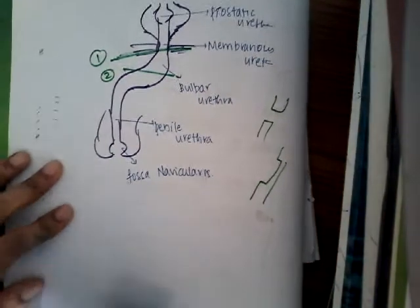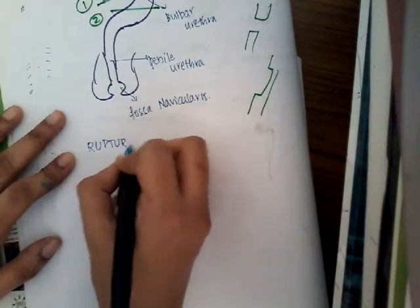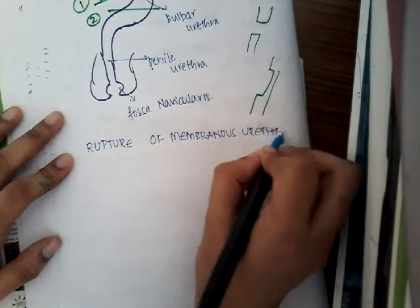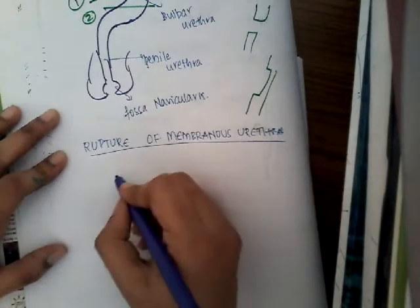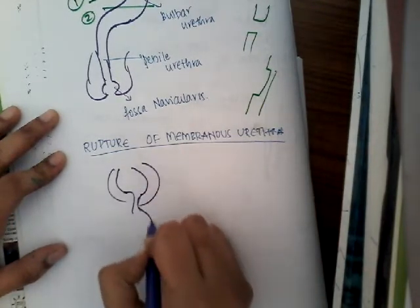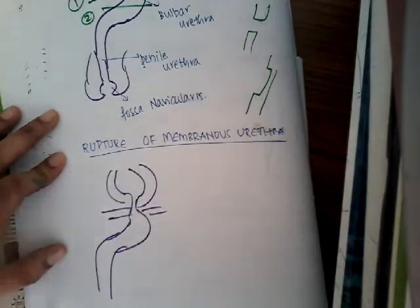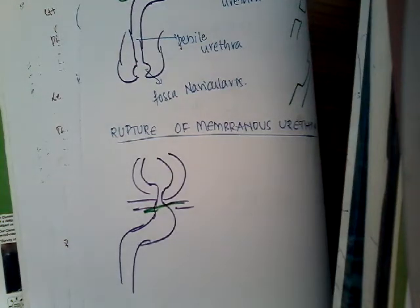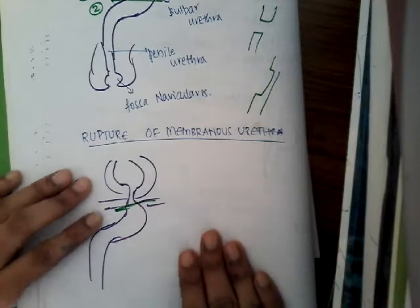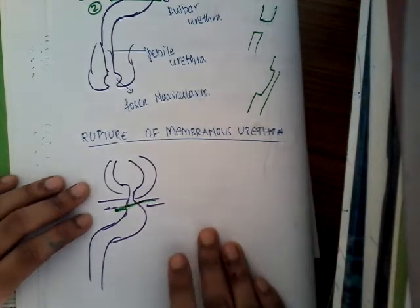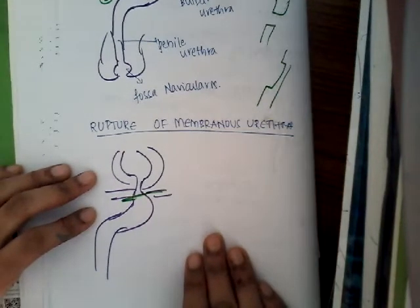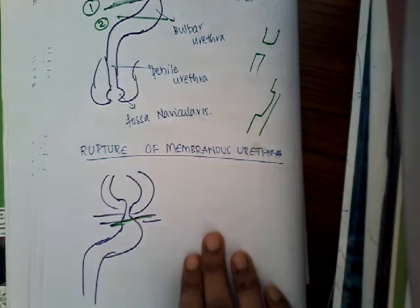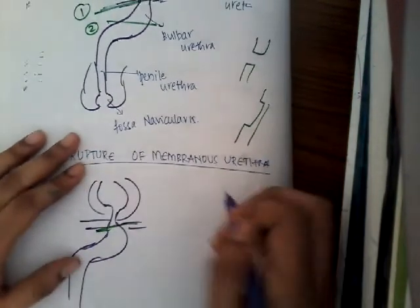If the rupture is in the membranous urethra, what are the causes? One: pelvic fractures can cause rupture in the membranous urethra. Two: penetrating wounds can also cause rupture in the membranous urethra.